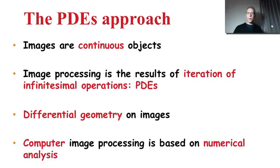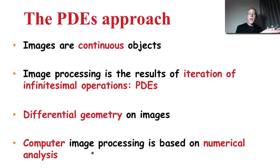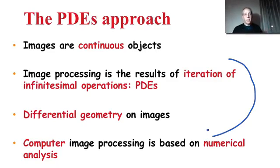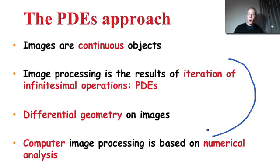Then you ask yourself: wait, my images are still discrete objects in my computer. Here numerical analysis comes to the rescue. Numerical analysis is exactly the area that addresses how to implement continuous algorithms and continuous mathematics in discrete domains like a computer. So you develop algorithms with tools of continuous mathematics, and then numerical analysis helps implement those algorithms in the computer. It's a different paradigm — not better, not worse, just different from the paradigm where we considered images as discrete objects from the very beginning.